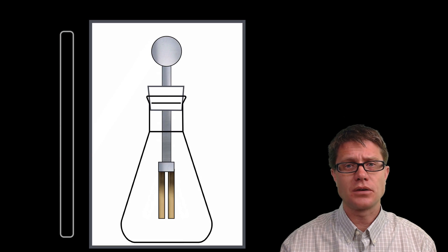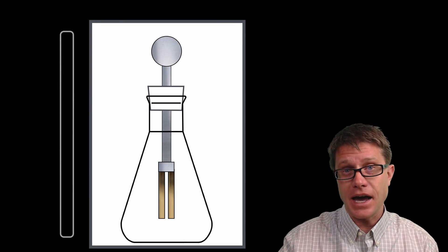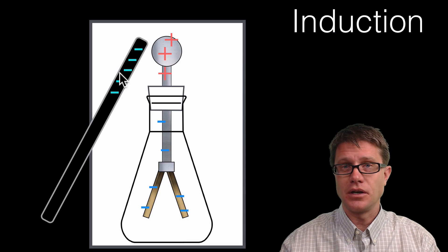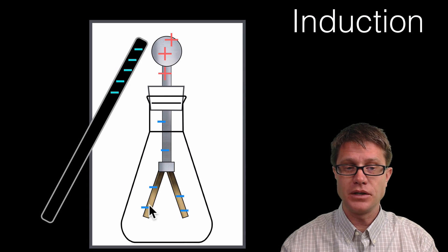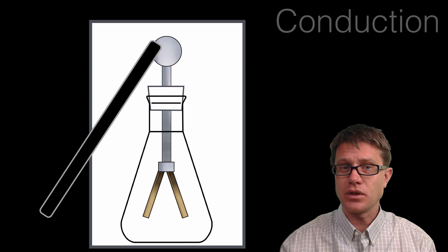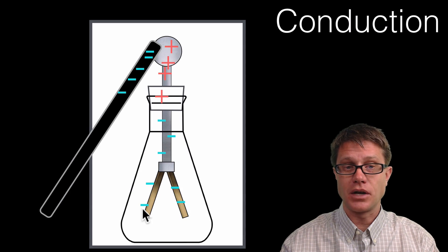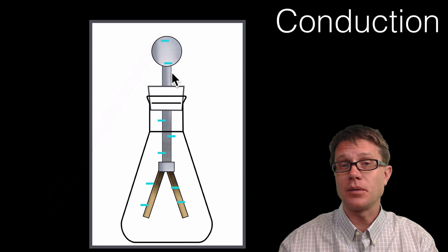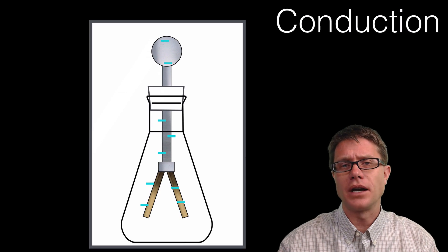Now let's try a negative object — a plastic rod. When we rub plastic we are adding electrons to it. As I move it next to the electroscope the same separation happens, but this time the negative charges in the rod repel the electrons in the conductor, pushing them down to the bottom leaves. Since we now have negative charges on either side, they push each other away. With conduction using the plastic rod, we physically touch it and electrons actually move through the conductor into it, adding a negative charge to the electroscope — a permanent negative charge that stays until those electrons are transferred somewhere else.